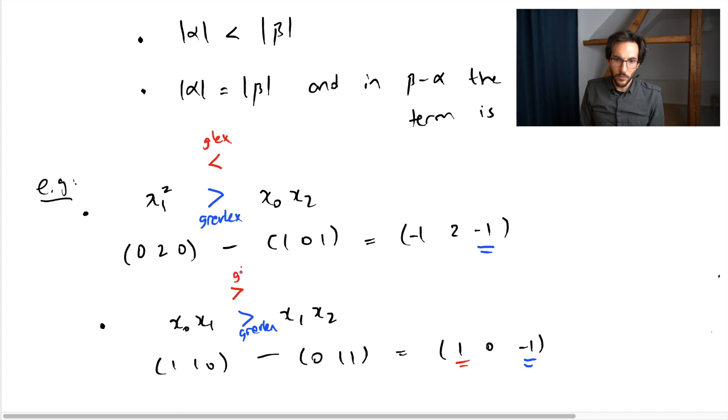This time the same equality holds. That means that the GLEX ordering and GREVLEX ordering are really different. So they're not just the opposites of one another. There is a more interesting structure.